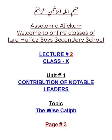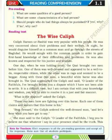Please take out your books and open page number 3. The unit is starting with pre-reading questions, meaning you have to answer these questions before reading the text. Question number 1 is: what are some qualities of a good person? What are some characteristics of a bad person? Should people who do bad things always be punished? If yes, why? If no, why not? Write the answers on a separate paper and when you come to school, I will check your answers.